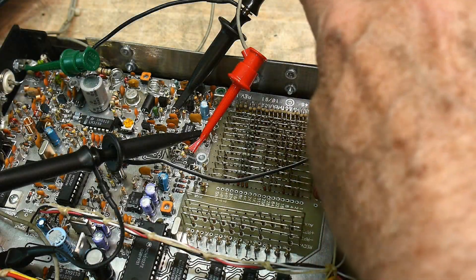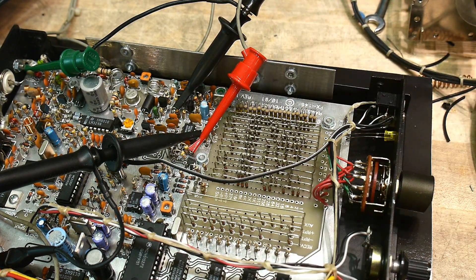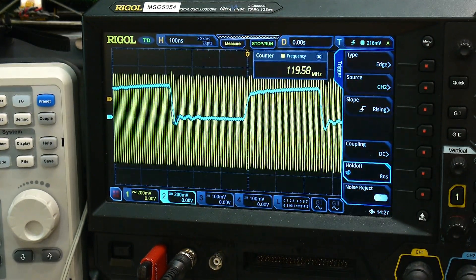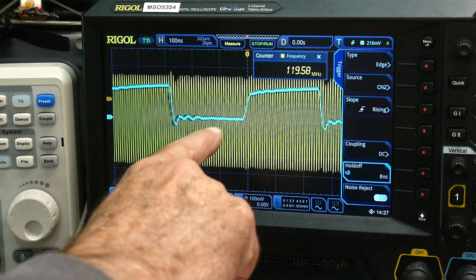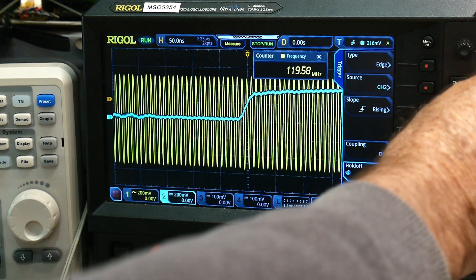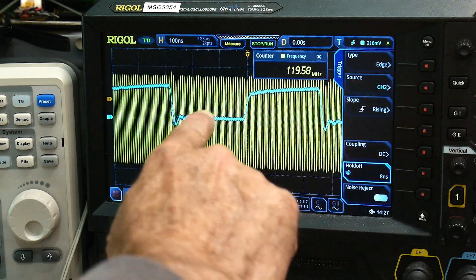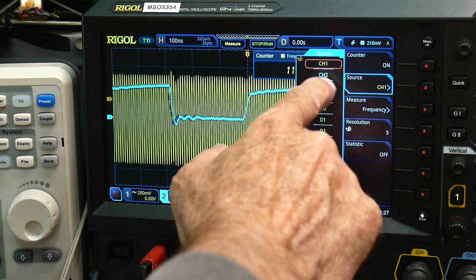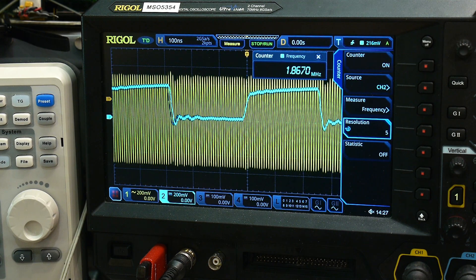All right. I've got a channel one looking at test point two and channel two looking at test point three and we should see a division. So we have, this is the divided signal and that's the input signal. So we have, 100 and almost 120, 120 megahertz coming in and then, coming out, we have, 1.86 megahertz. Okay.